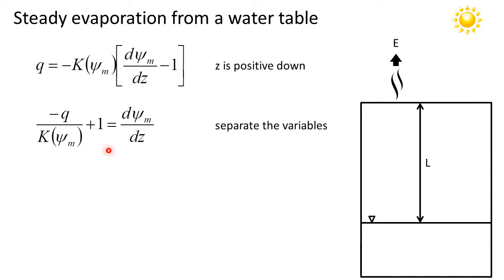Algebraically we can just rearrange this equation to get dψ_m/dz by itself on the right-hand side and then we can separate the variables so that we'll be able to perform an integration.